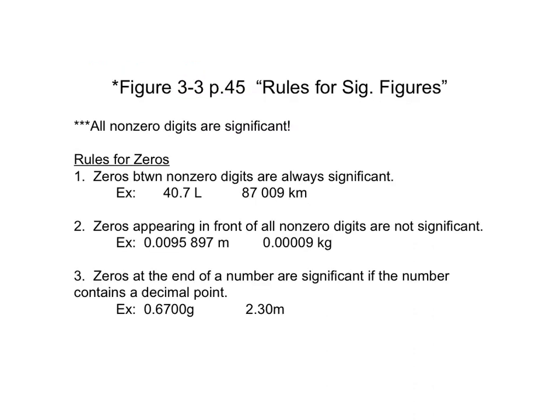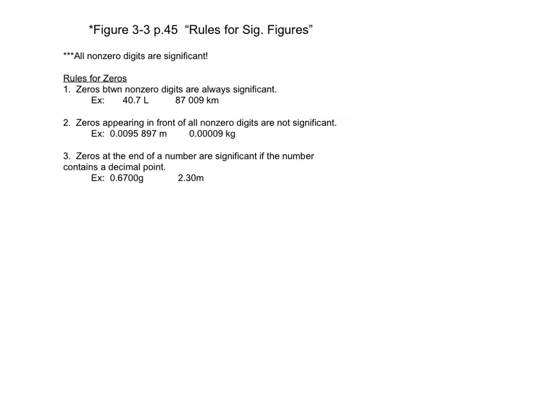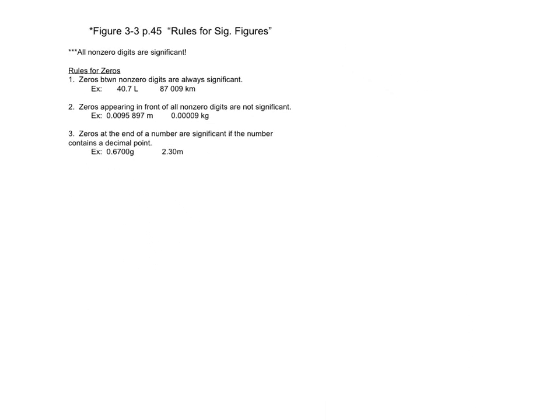These are our rules for determining if a number is significant. First, all numbers 1 through 9 are significant. So if I had the number 24, there are two significant figures in that number, and they're both non-zero, so they're both significant to my measurement. It's the zeros that are a pain.